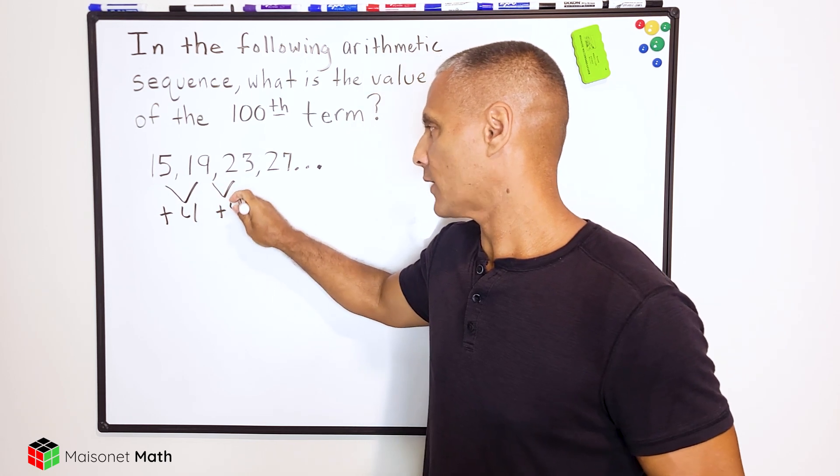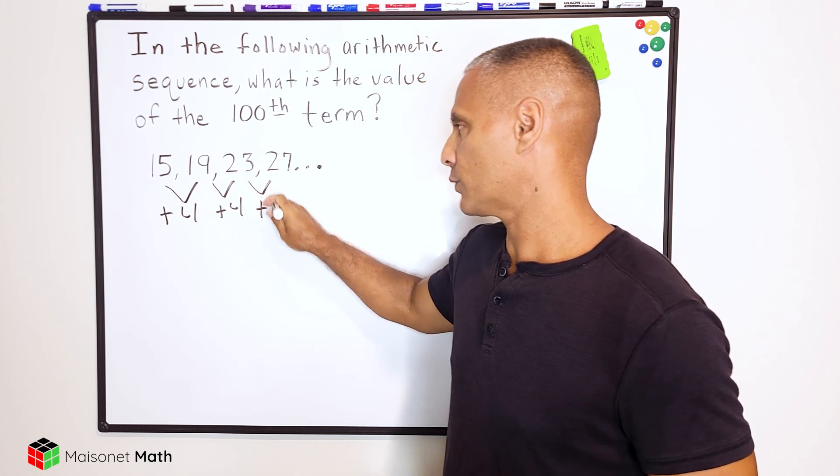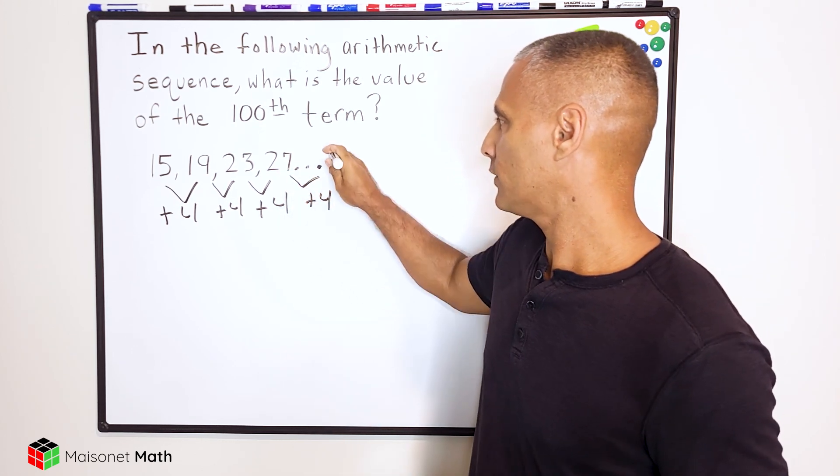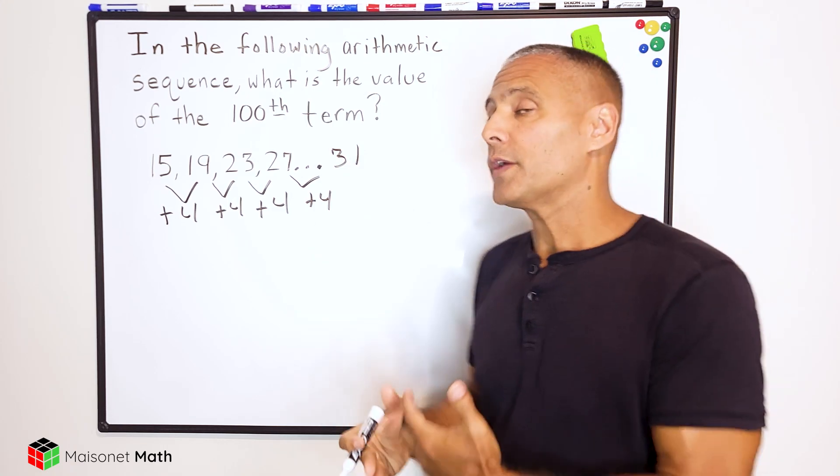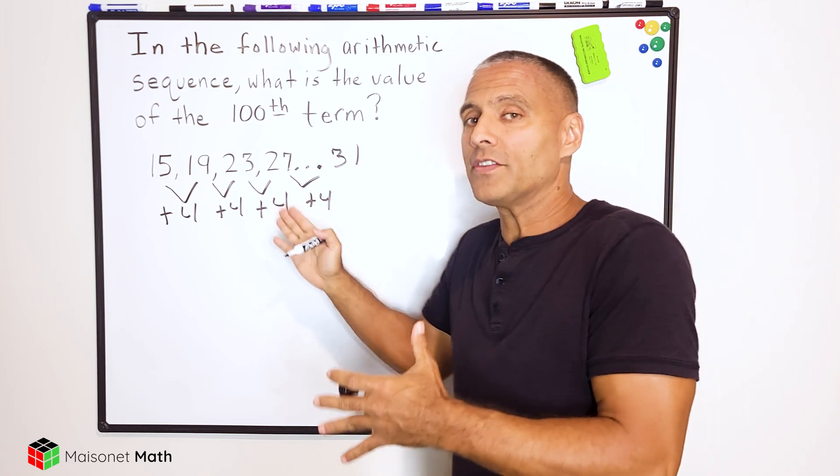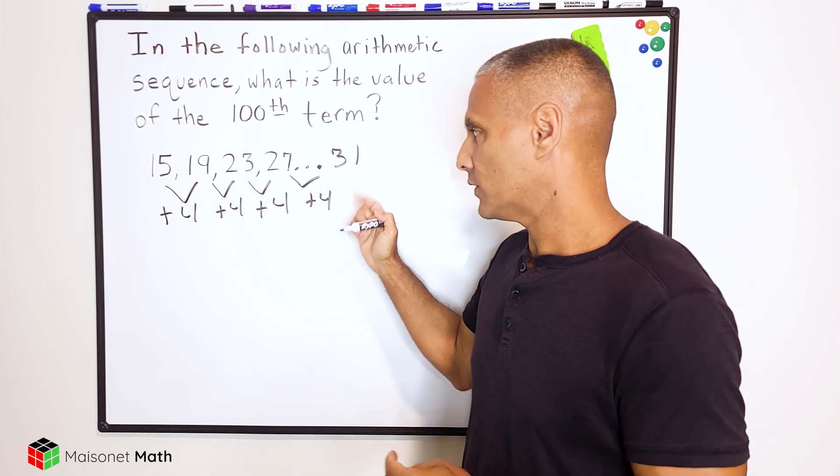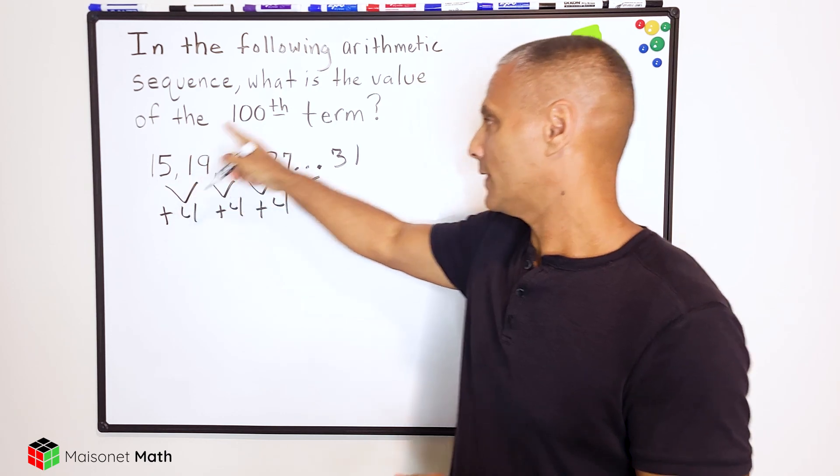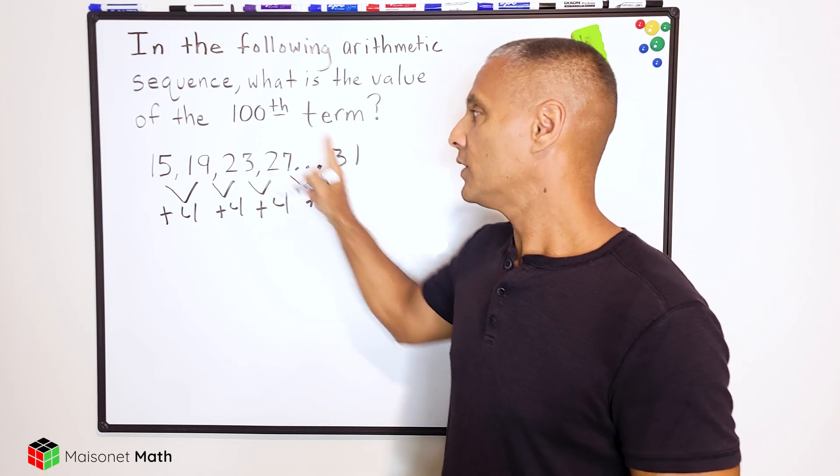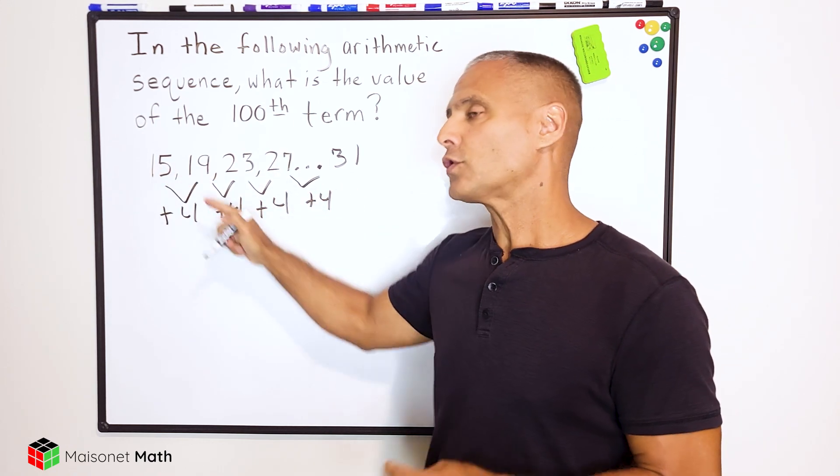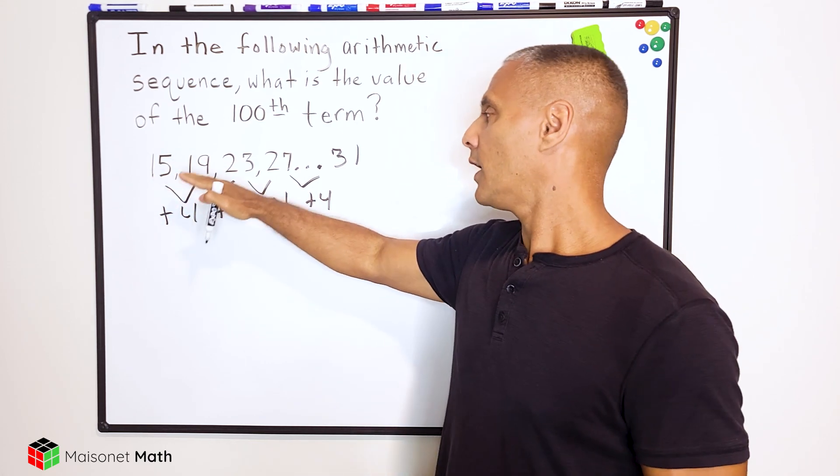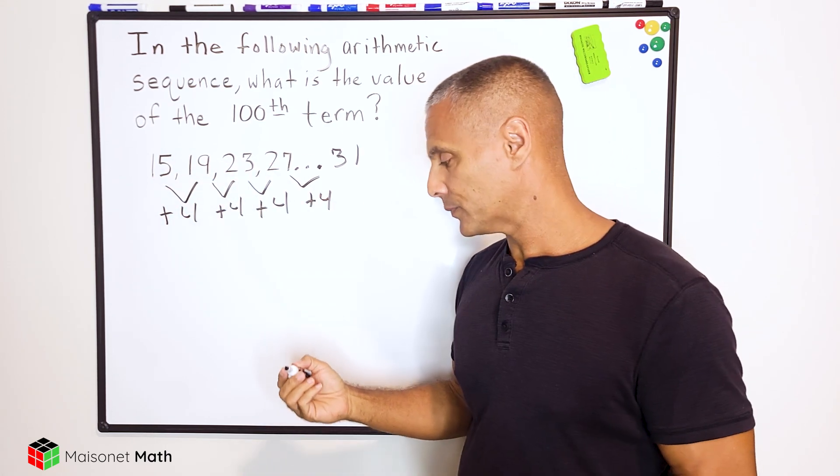So what we can do is project four to figure out what our hundredth term is going to equal. So if we were to add four more to 27, that would give us 31. Now one thing we should notice about these increases is that you're always going to have one less increase than the number of terms in your sequence. For example, if we take a look at the fifth term, there were four increases to get to that fifth term starting from the first term. So you're always going to have one less common difference than the total number of terms in your sequence.